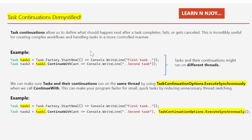Let's understand it with the help of examples shown here. We have two tasks: Task 1 and Task 2. Task 1 prints 'first task' to the console window using console.writeline. Task 2 writes 'second task' to the console window right after Task 1 finishes. Task 2 will wait for Task 1 to finish, and here I have written task1.ContinueWith. The ContinueWith method ensures that Task 2 starts right after Task 1 finishes.